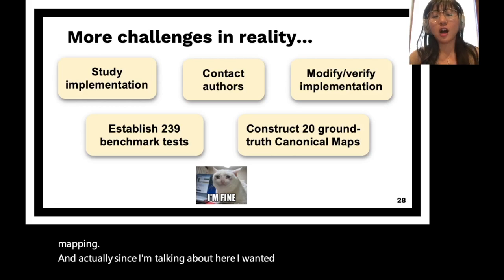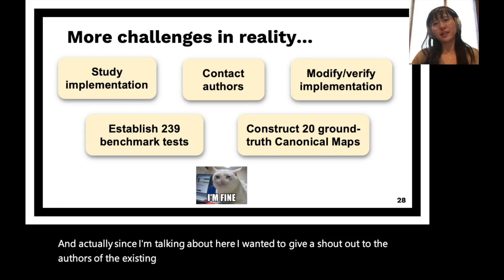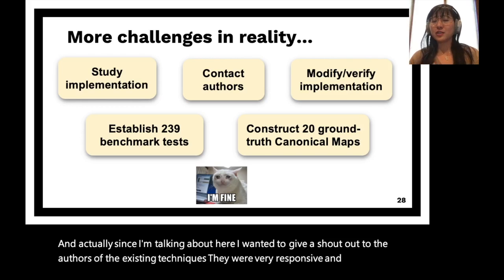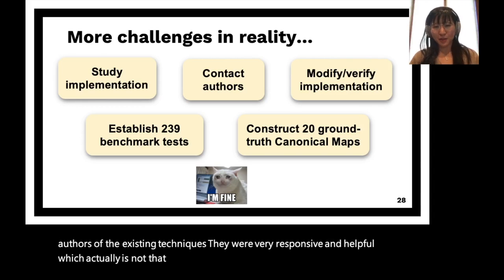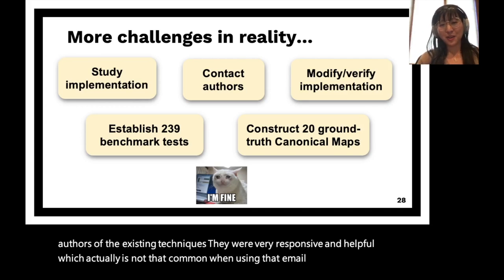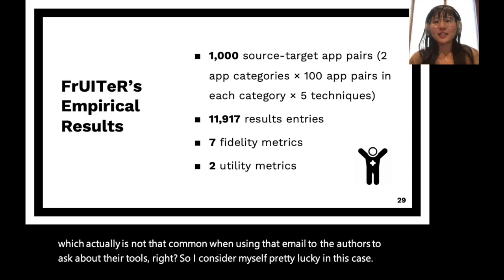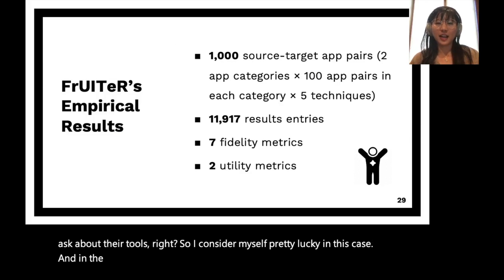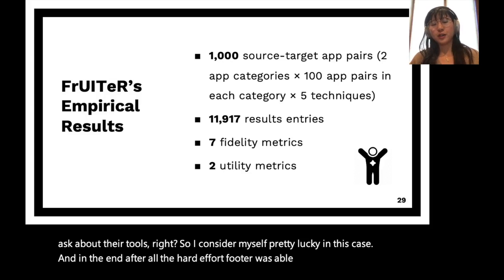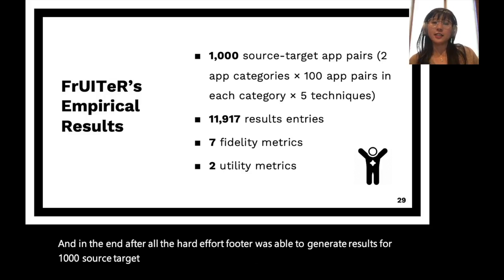I want to give a shout-out to the authors of the existing techniques — they were very responsive and helpful, which is not always common when you email authors about their tools. After all that hard effort, Fruiter was able to generate results for 1,000 source-target app pairs, yielding over 10,000 result entries.